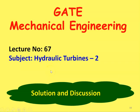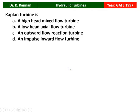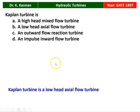In the earlier lecture, we solved a few questions from the GATE question paper in hydraulic turbines. We will continue with the questions from hydraulic turbines. The question is from the 1997 question paper: Kaplan turbine is — with 4 options given: high head mixed flow turbine, low head axial flow turbine, an outward flow reaction turbine, and impulse inward flow turbine. Kaplan turbine is a low head axial flow turbine, so the correct option is option B.